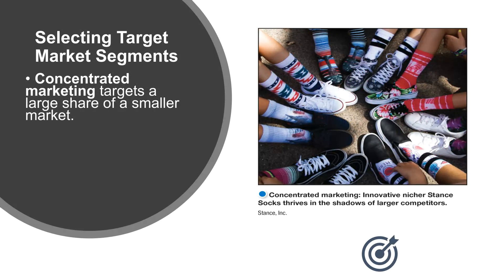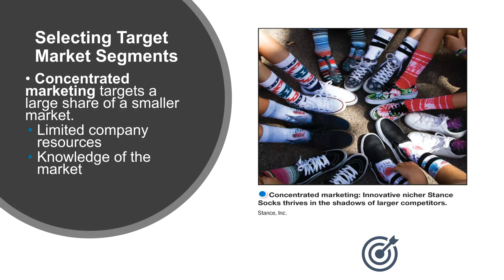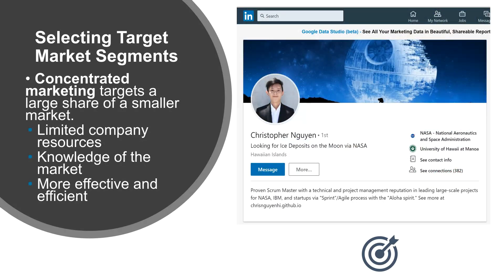Concentrated marketing is where you're trying to get a large share of a smaller market. You have to be innovative and almost a niche. For example, here's a sock company trying to target the sock industry, which is huge, but they're going after kids who want funky socks. The people who usually use concentrated marketing have limited company resources but know the market really well, and they tend to be more effective and efficient. This is what Chris is using — concentrated marketing targeting a large organization but a smaller market within Google, which is that technical project manager role.